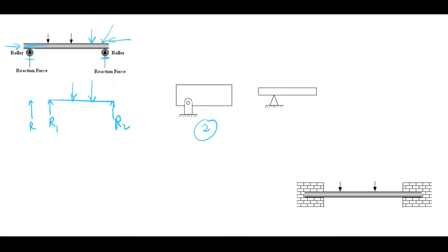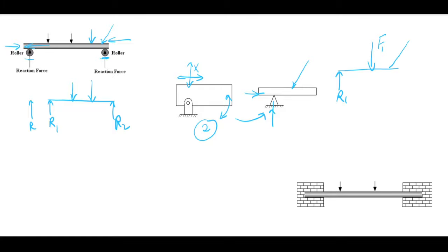The second type is the hinge support. In a hinge support, the beam can swing but cannot move transversely. It is represented by the standard symbol shown in the figure. This type of support is used when inclined forces are present, as it resists both axial and normal forces. In the line diagram, we have reactions R1 and, if there is an inclined force, an additional reaction R2 along the axis. However, the hinge support allows rotation of the beam, so there is no resistive moment offered.